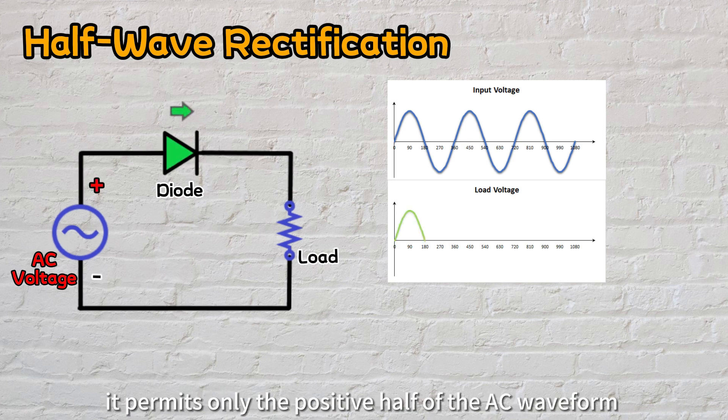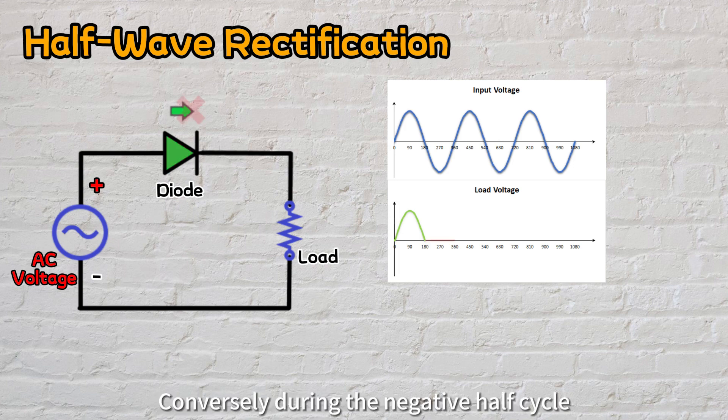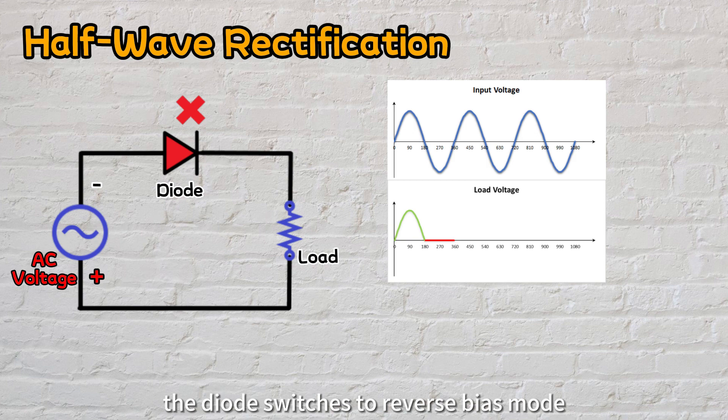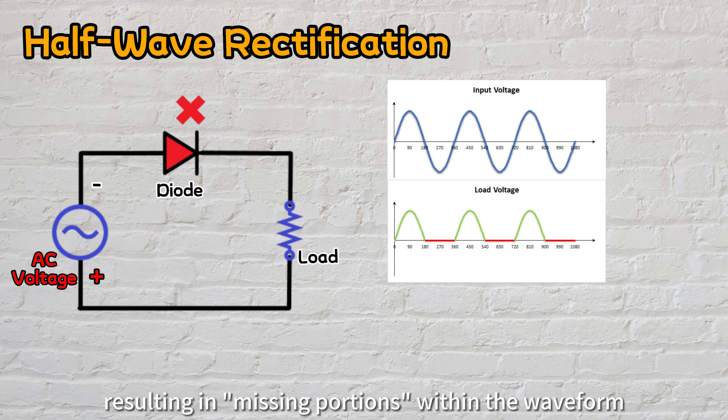When connected to an AC supply, it permits only the positive half of the AC waveform to pass through during forward bias mode. Conversely, during the negative half cycle, the diode switches to reverse bias mode, effectively obstructing the current flow. This creates interruptions in the electrical flow, resulting in missing portions within the waveform.